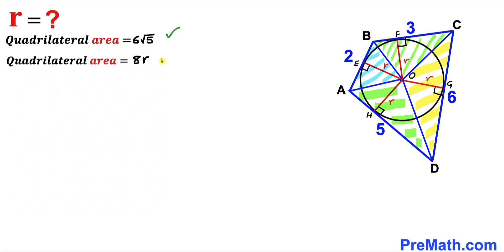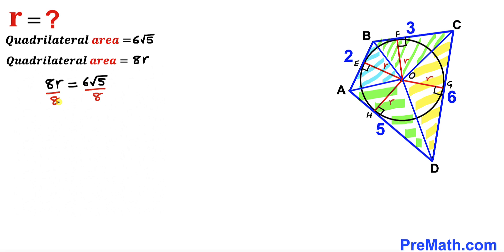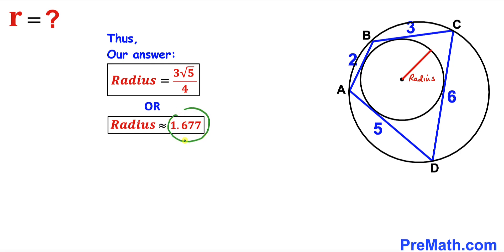Comparing the two expressions: the quadrilateral area is 6√5 and the area is also 8r. Equating: 8r = 6√5. Dividing both sides by 8, the radius r = 6√5 / 8 = 3√5 / 4 units, which is approximately equal to 1.677 units. Thanks for watching and please don't forget to subscribe to my channel for more exciting videos.